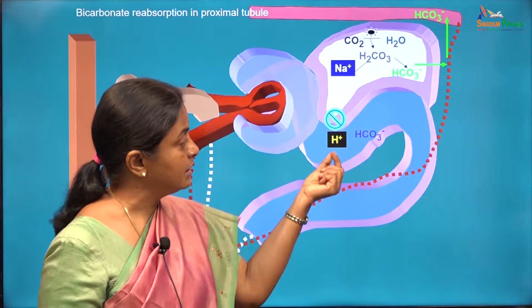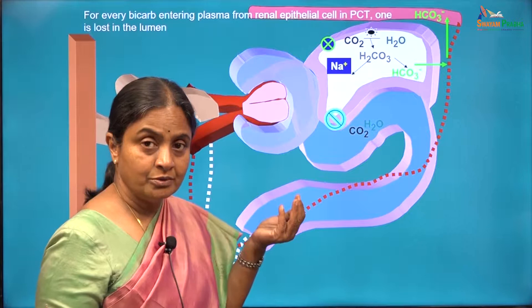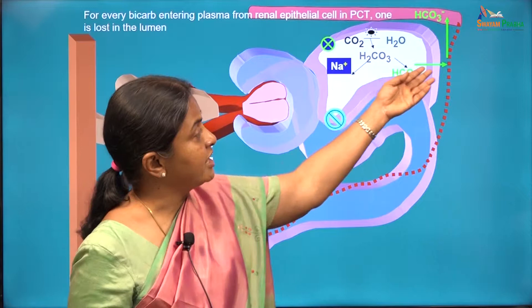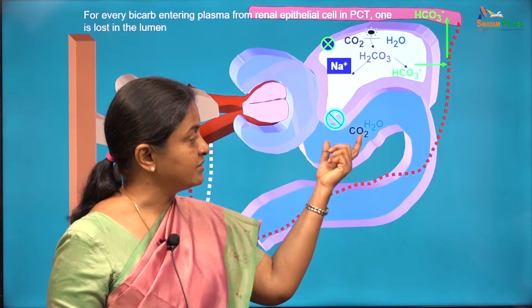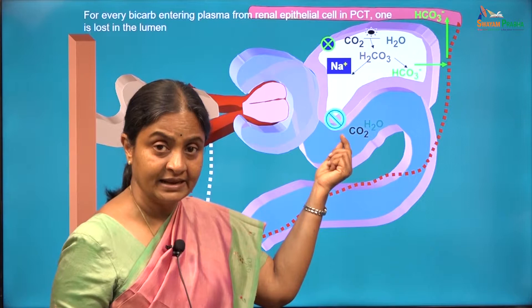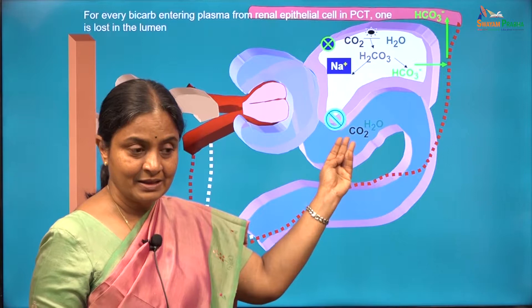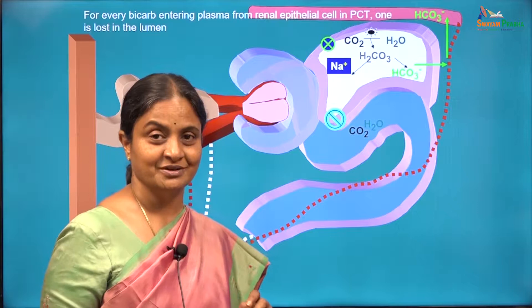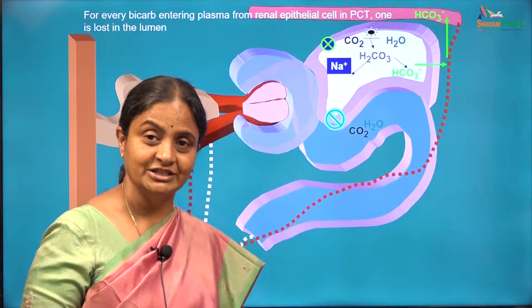Carbon dioxide and water will be formed. Carbon dioxide will diffuse back to the cell and water is eliminated. For every bicarbonate that is given to plasma, one proton should be removed from the cell, and that proton combines with one bicarbonate present in the tubular fluid — they annihilate each other. Therefore, for every bicarbonate gained in plasma, one bicarbonate is lost in the tubular fluid. There is no net gain, and the process is called bicarbonate reabsorption.